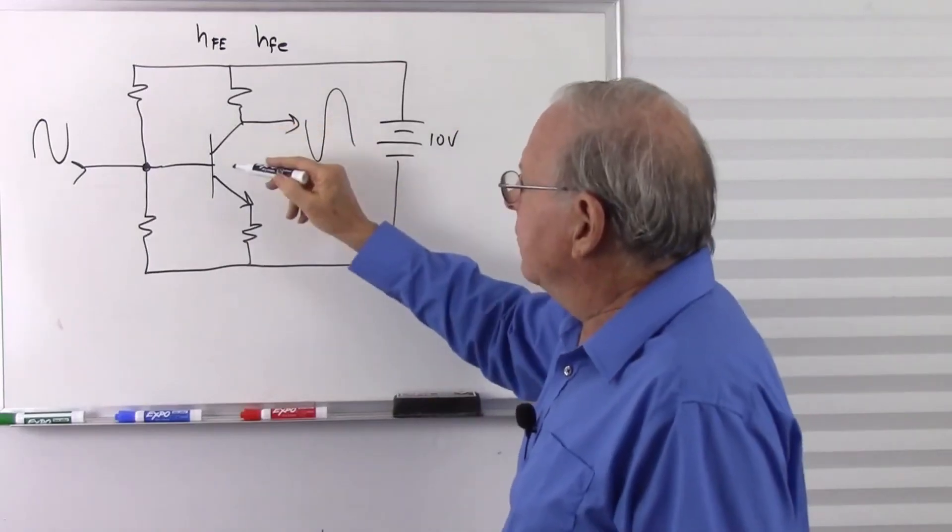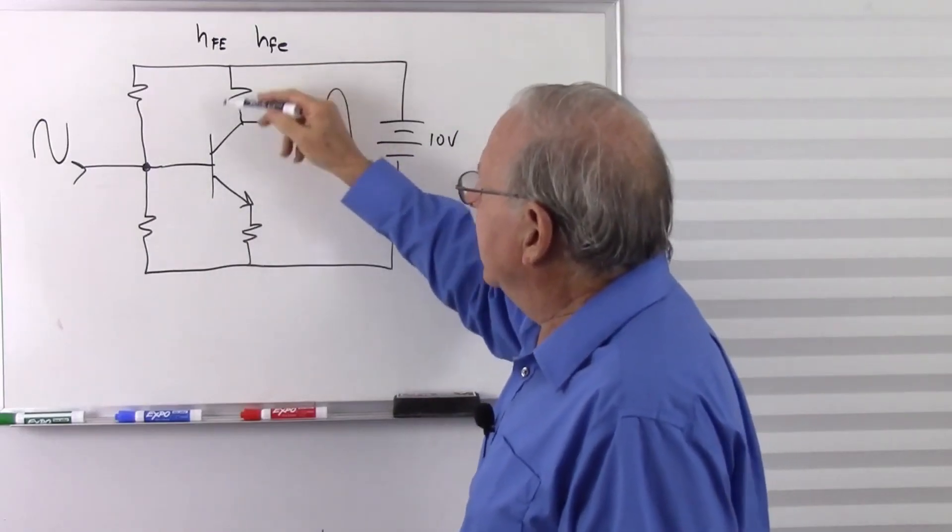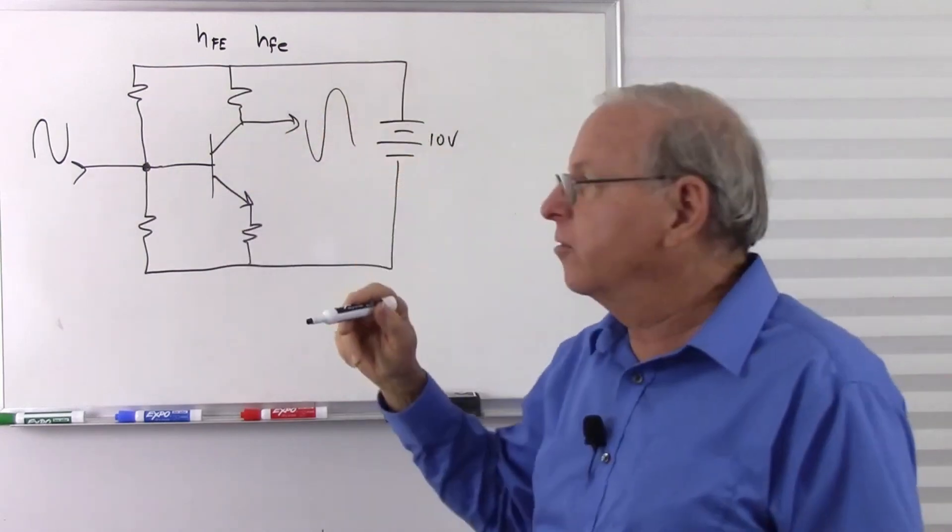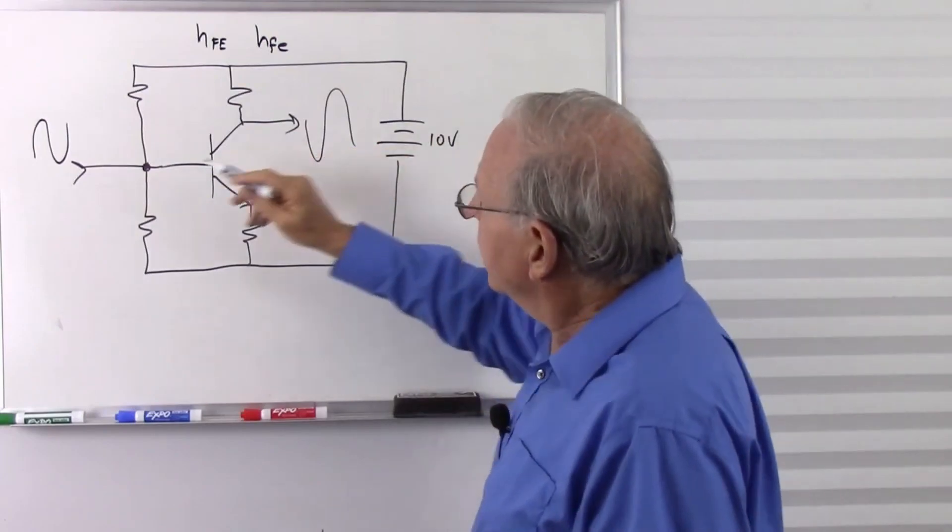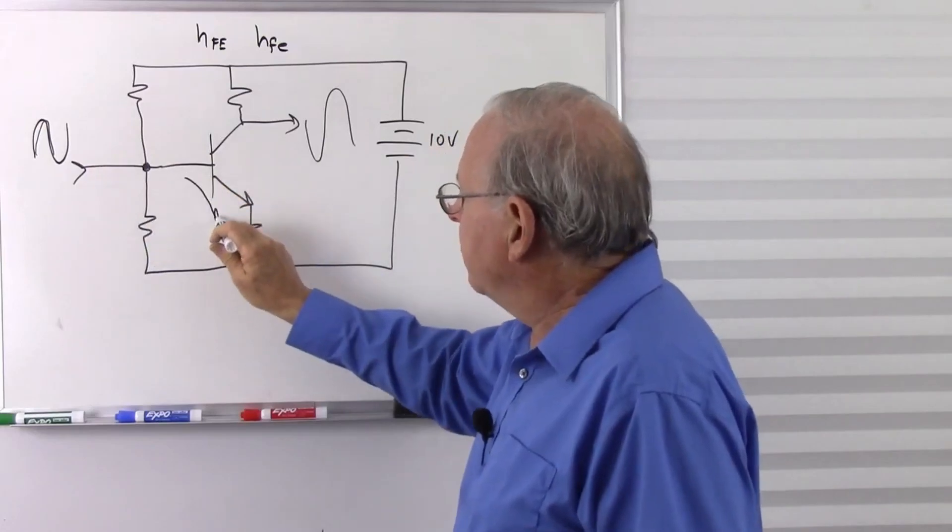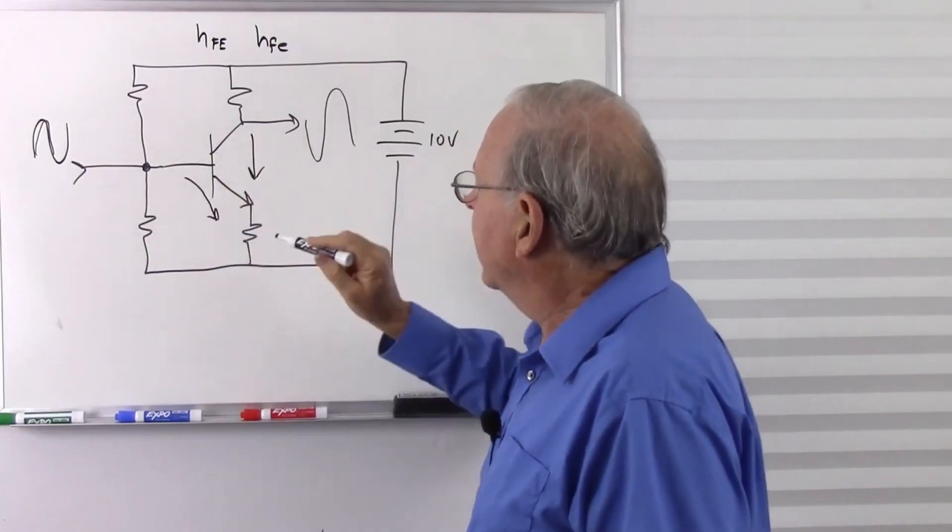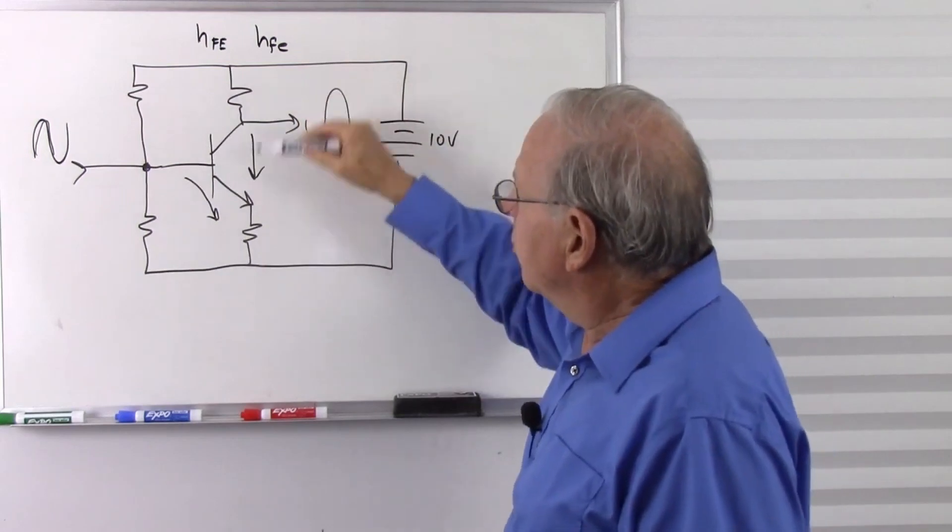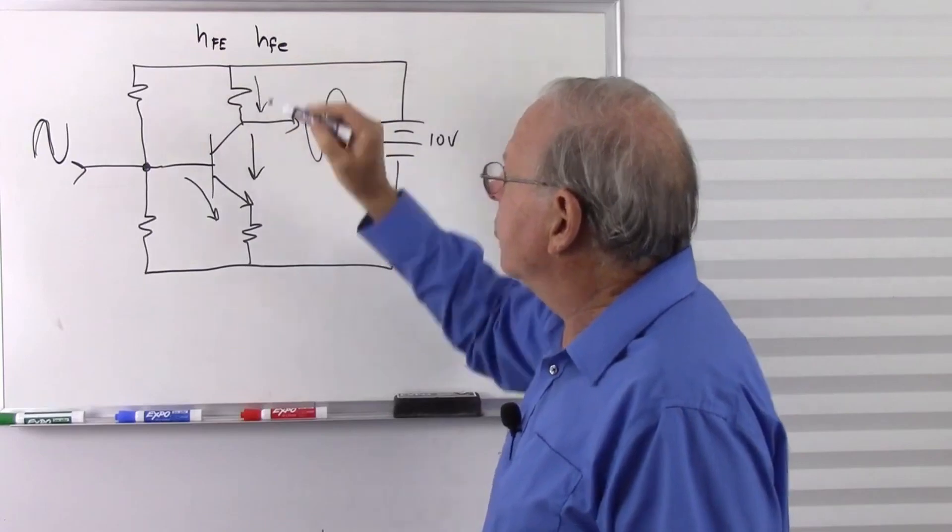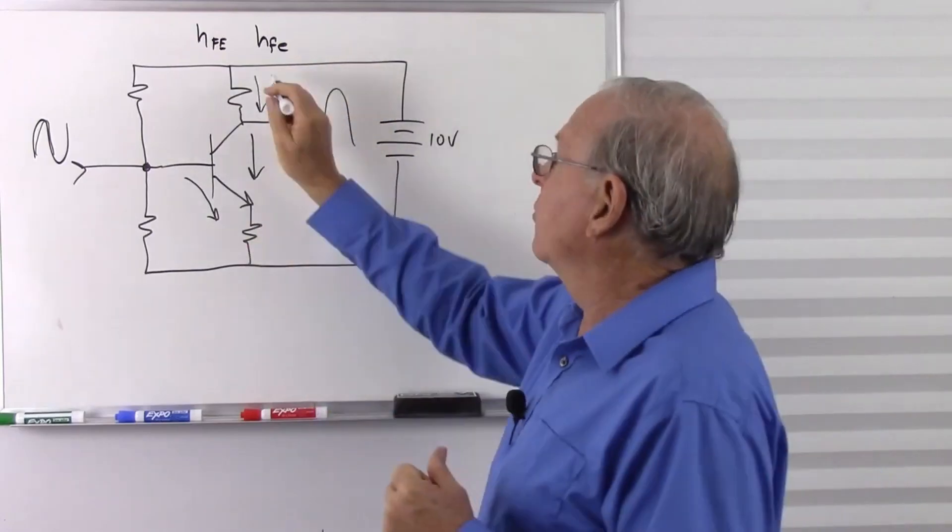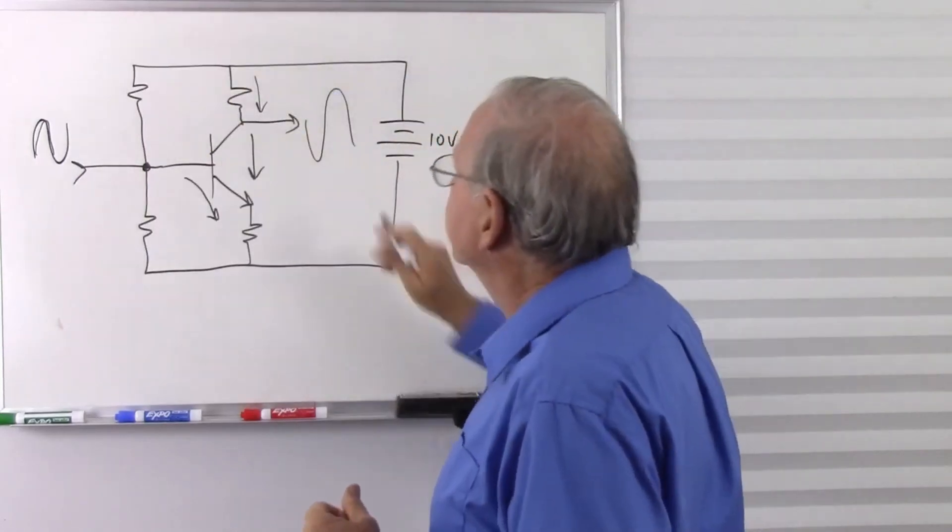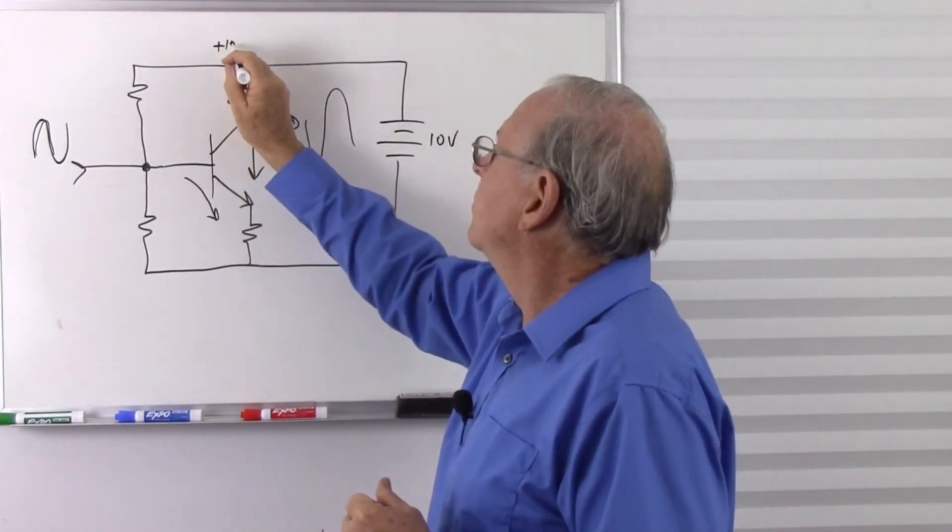Depending on the HFE of the transistor, and the resistors around it, and the input voltage, we're going to get a certain amount of amplification through this resistor. Now, the problem is, as this voltage goes up, we get more current into the base, which means more current into the collector. As we pull more current through the collector, more current through the collector resistor means a greater voltage across it. Now, this is anchored at 10 volts up here.